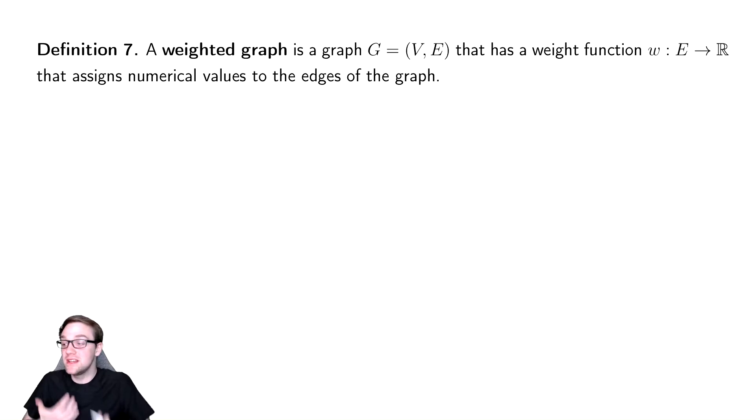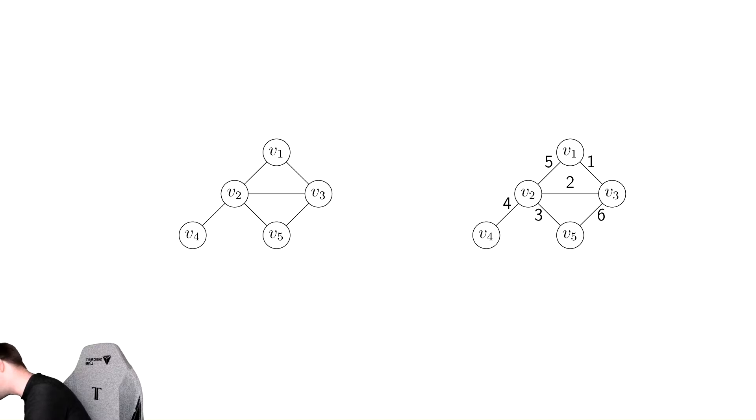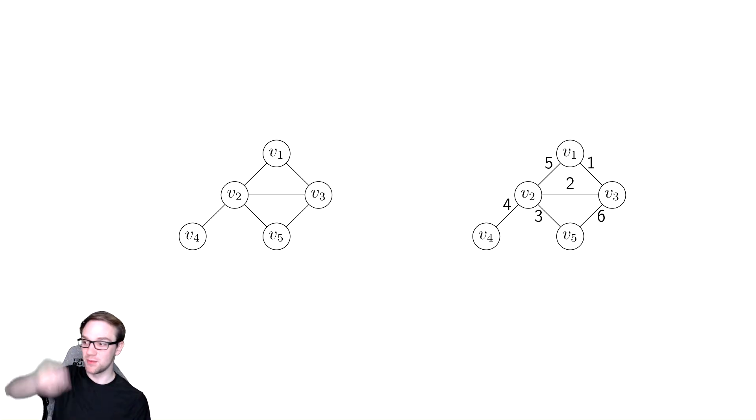And when they have meaning, you often need to associate a number with it. As an example, we have two graphs down here. The one on the left is one we did before and the one on the right is weighted. All we've done is put numbers next to the edges. And having put those numbers next to the edges, we can now maybe associate meaning to those in some context.